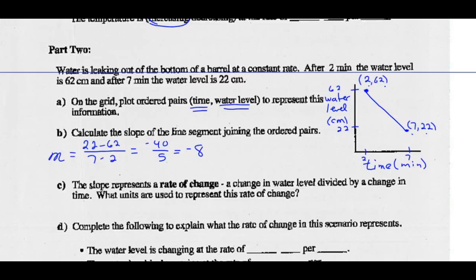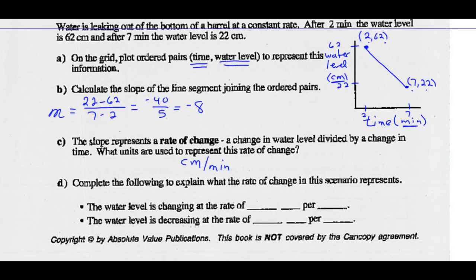The slope represents a rate of change — a change in water level divided by a change in time. The units are centimeters per minute. The water level is decreasing at a rate of 8 centimeters per minute. We take the negative sign out because we've said decreasing, so the rate is 8 centimeters per minute.